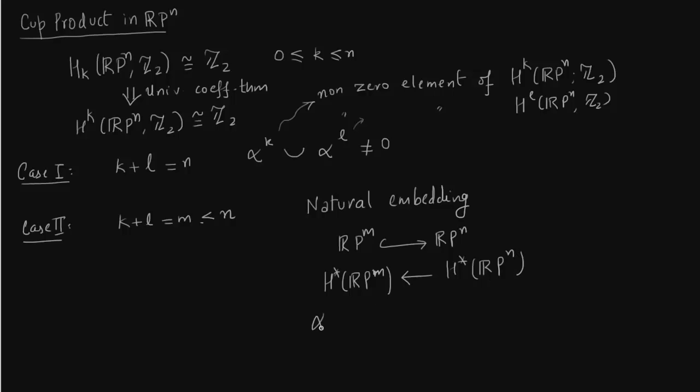That now k plus L, alpha k cup alpha L is non-zero here. Because k plus L is M and by proposition 3.39 on page 250, this has to be non-zero if both the summands add up to the dimension of the manifold. So k plus L equals M and RP^M also has M in the exponent. So since it is non-zero here, it has to come from a non-zero element in the graded ring H star RP^N.